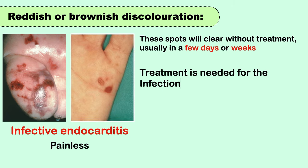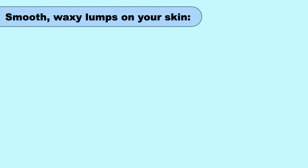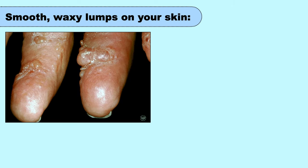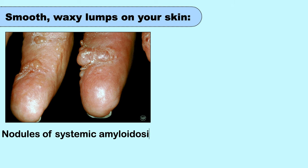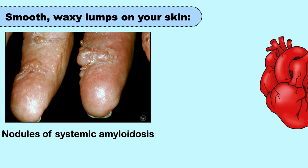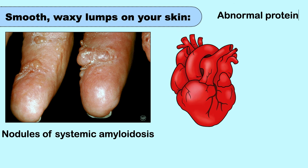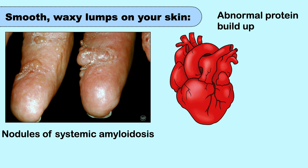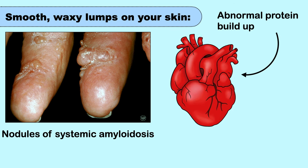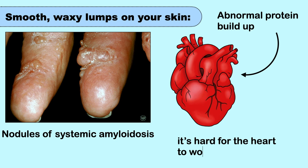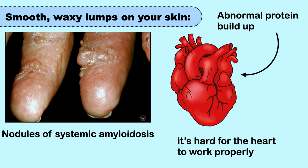You may also find smooth waxy lumps on your skin. They are called nodules of systemic amyloidosis, and they often indicate that there is an abnormal buildup of a protein in an organ such as your heart. If protein builds up in your heart, it becomes hard for the heart to work properly.